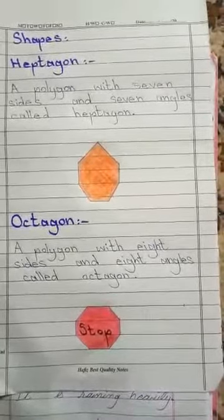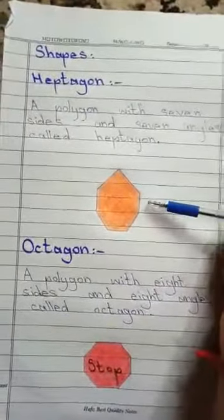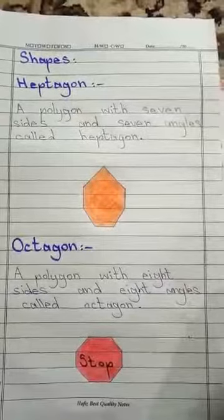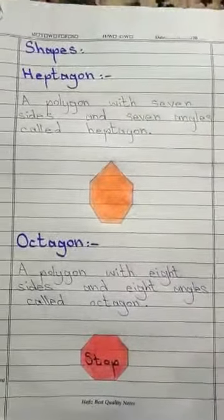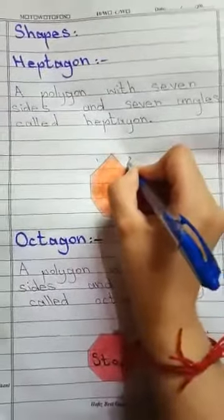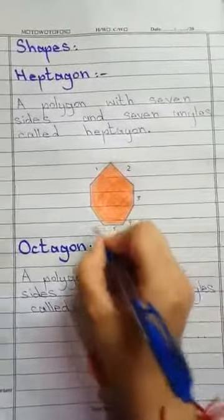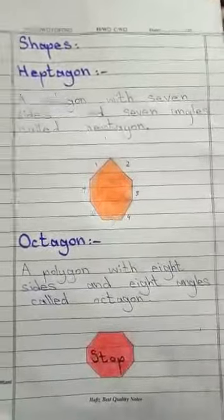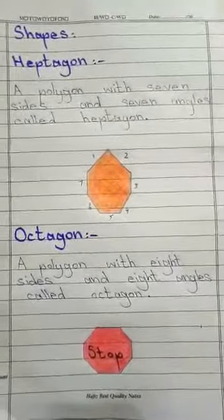The name of the new shape is heptagon. A heptagon is a polygon with seven sides and seven angles. Let's count its sides: one, two, three, four, five, six, and seven. So a polygon with seven sides and seven angles is called a heptagon.